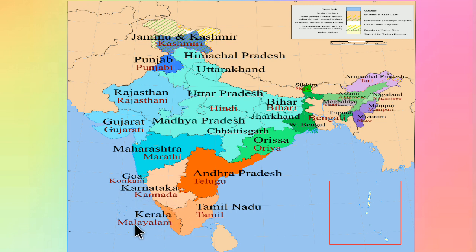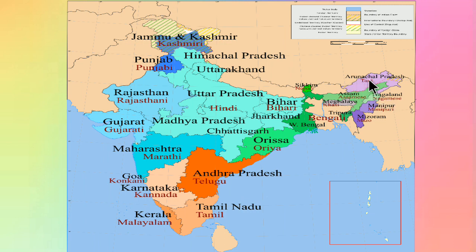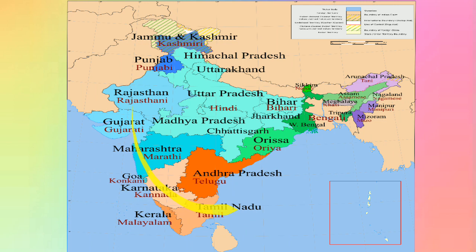Kerala — Malayalam. Tamil Nadu — Tamil. Andhra Pradesh — Telugu. Mizoram — Mizo. Manipur — Manipuri. Arunachal Pradesh — Tani. So many languages are spoken in India's states.